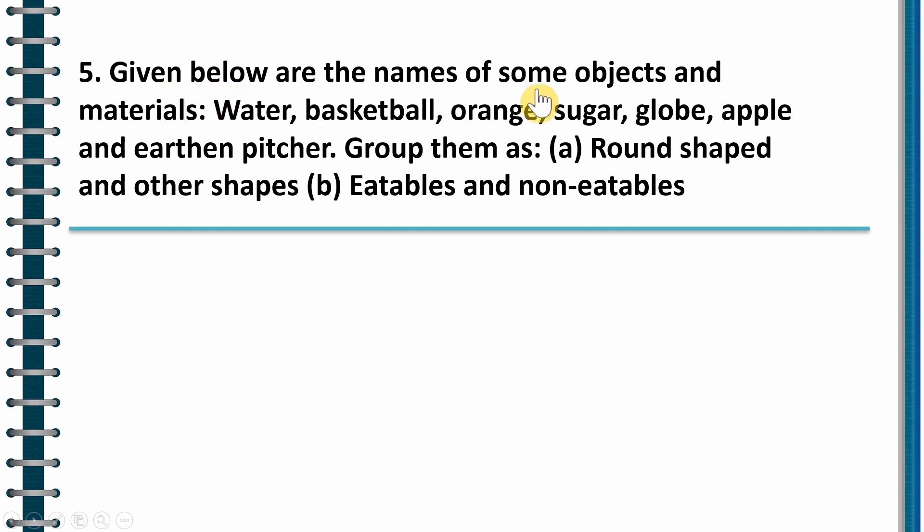Fifth question, given below are the names of some objects and materials. Water, basketball, orange, sugar, globe, apple, and earthen pitcher. Group them as round shaped and other shapes, eatables and non-eatables.